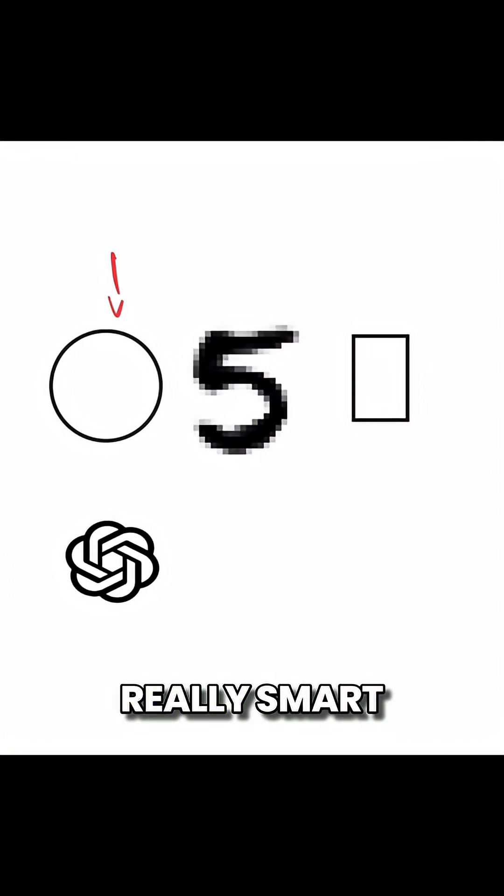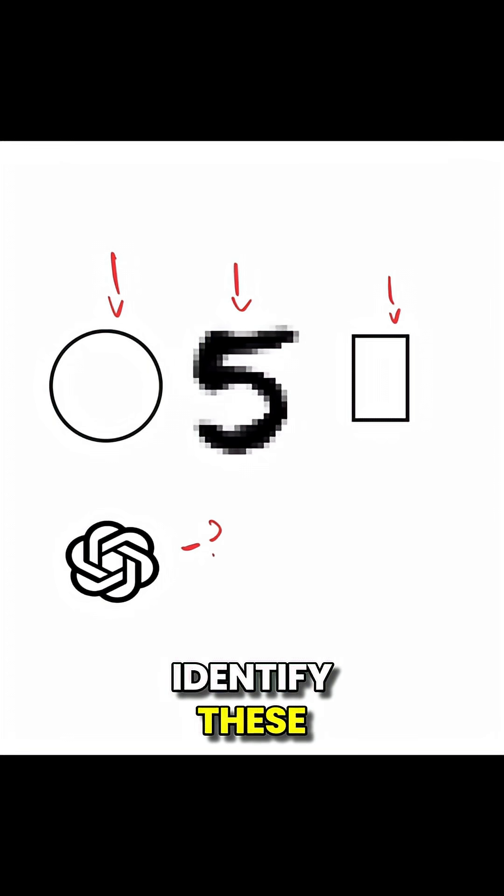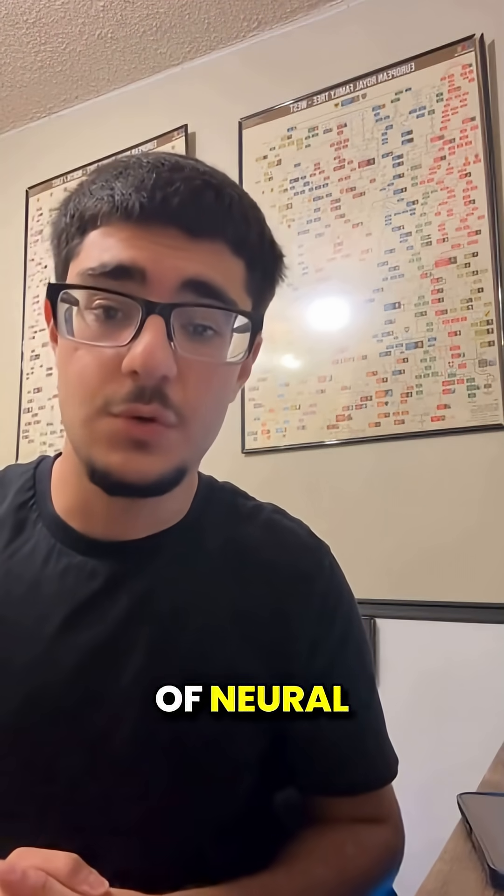A few decades ago, some really smart scientists looked at how our brains recognize things like faces, numbers, or shapes, and asked the big question: why can't computers identify these things too? That question led to the idea of neural networks.